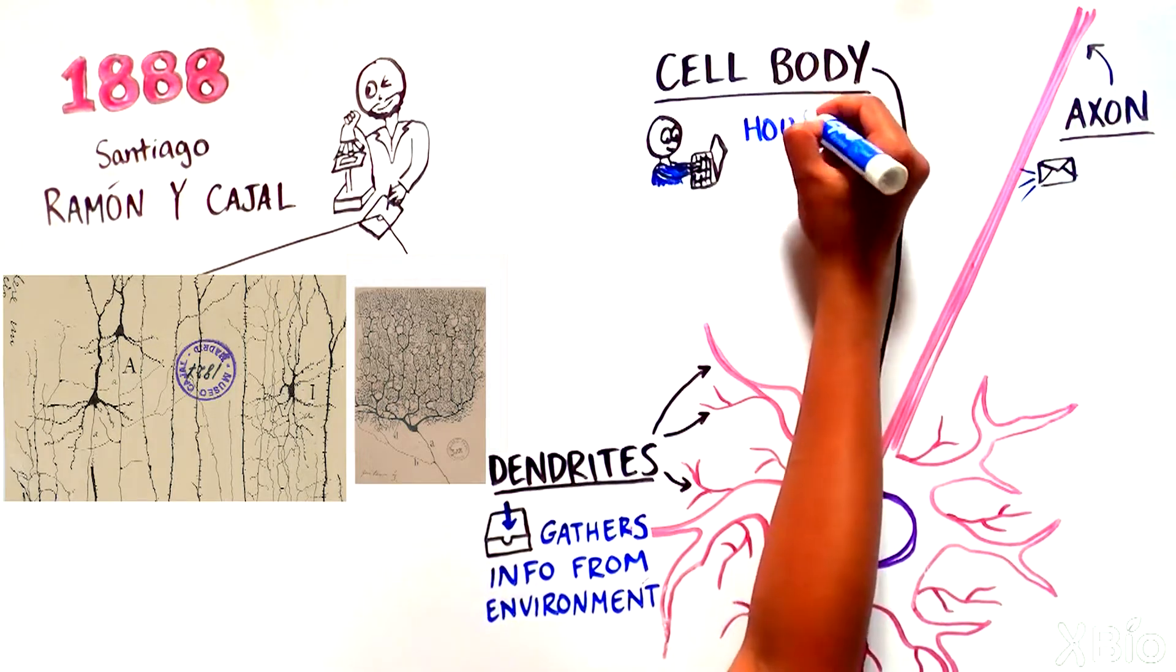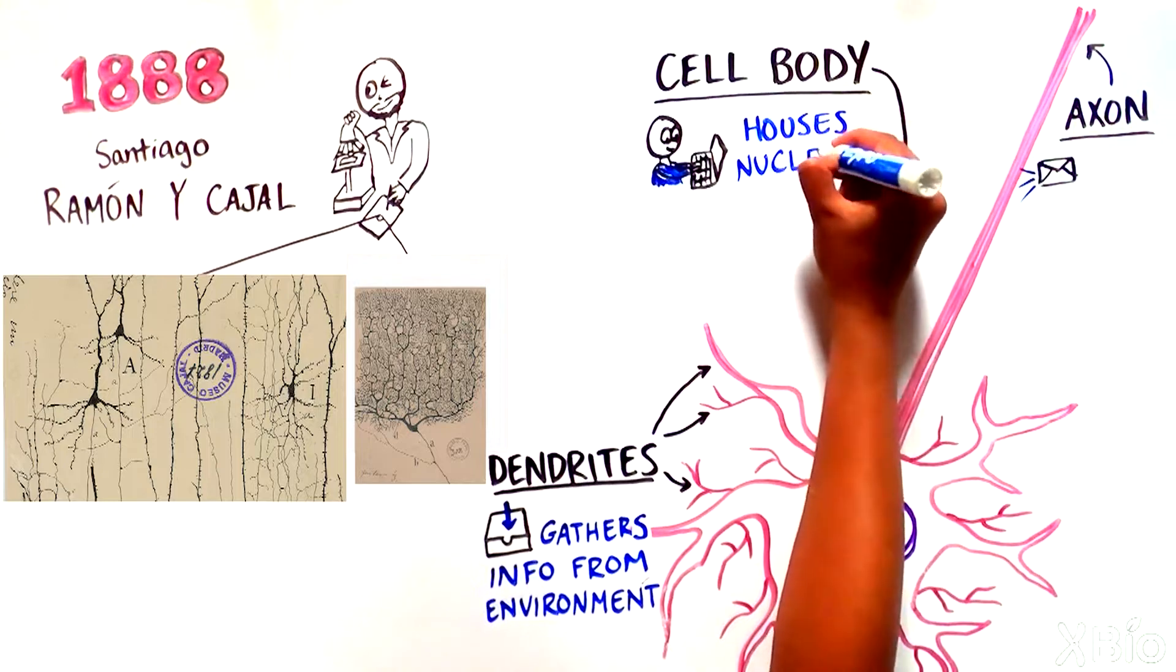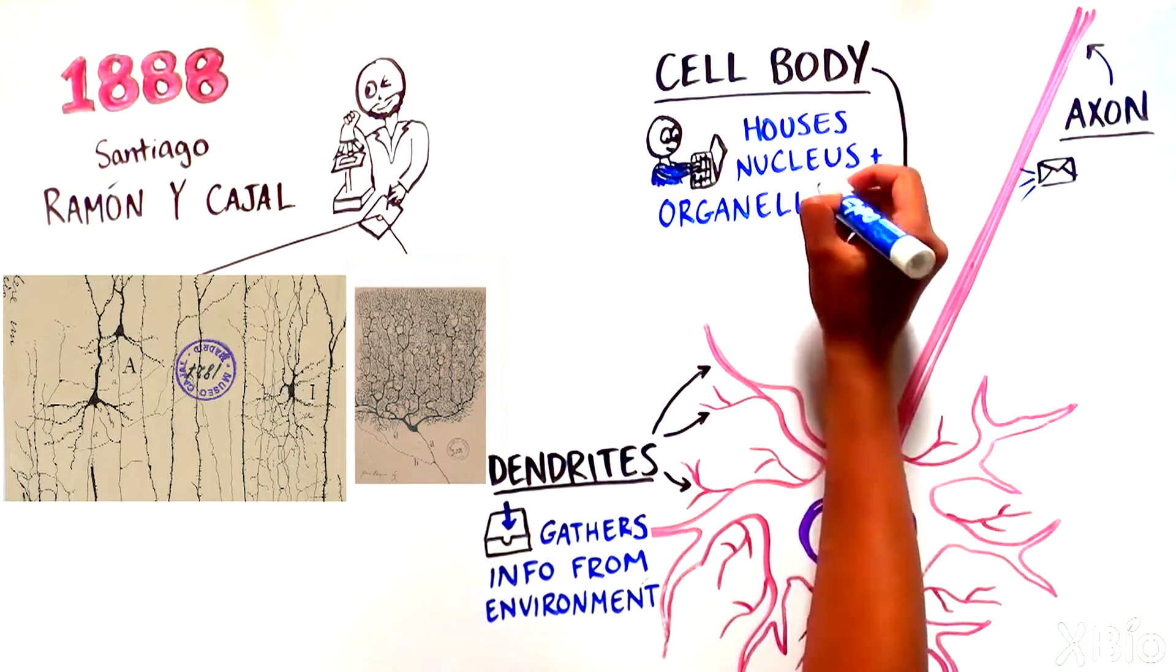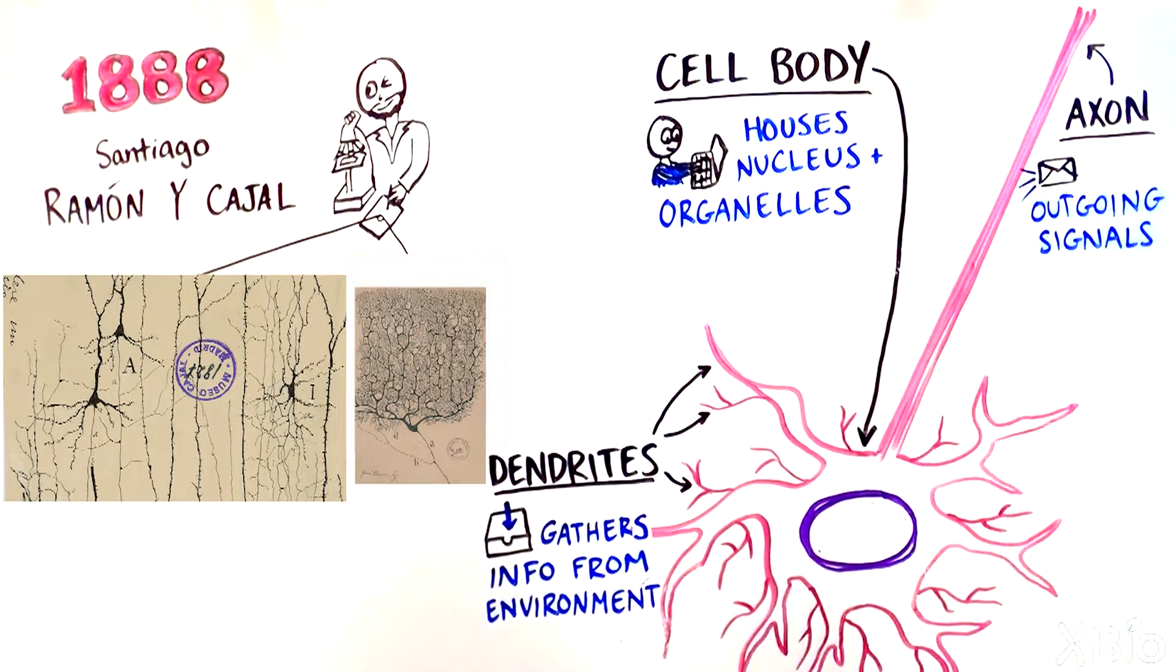The cell body houses the nucleus and many of the cellular organs, known as organelles, which aid in processing incoming messages from the dendrites and regulating the production of outputs, like proteins or other molecules.